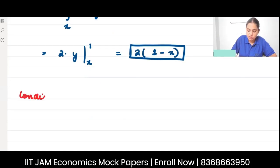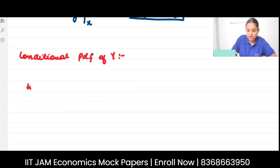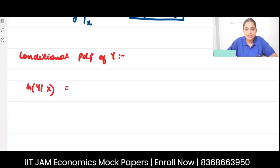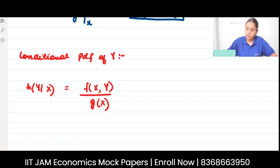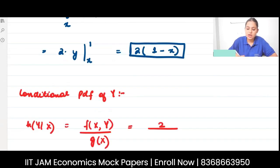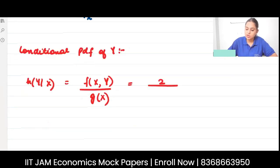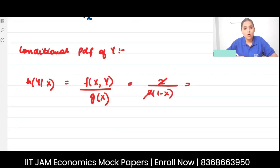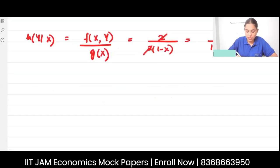Now find the conditional PDF of Y, represented by h(y|x). The formula for conditional PDF is the joint PDF divided by the marginal PDF. That is 2 divided by 2(1 - x), which simplifies to 1/(1 - x). You should refer to your statistics lecture notes from chapters 2 to 5 to follow these steps.